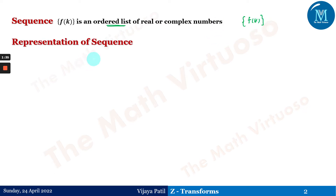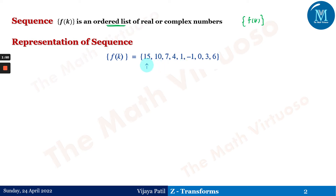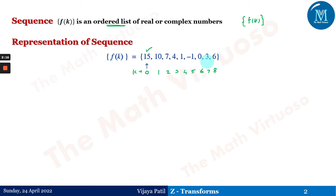Now, how is the representation of a sequence done? If this has been defined as f(k): 15, 10, 7, 4, 1, -1, 0, 3, 6, with commas in between, and if there is an arrow below a particular element — in the current case it is the arrow below 15 — that means this particular 15 is at position k=0 in the sequence. Then 10 is at the first position, 7 at 2nd, and so on through the 8th position.